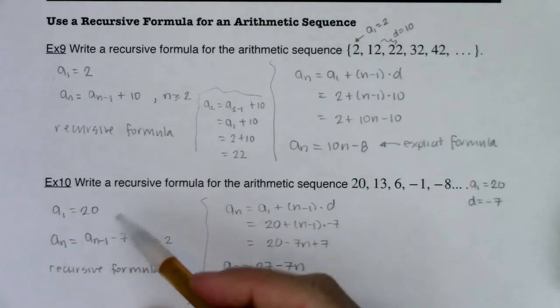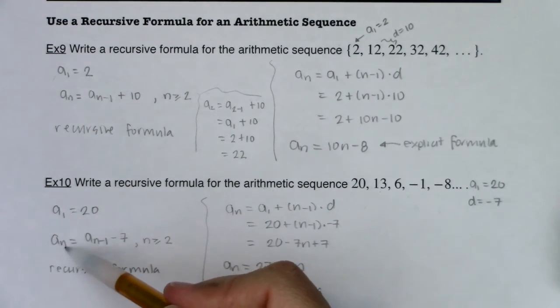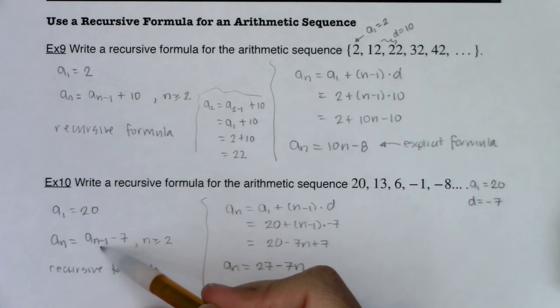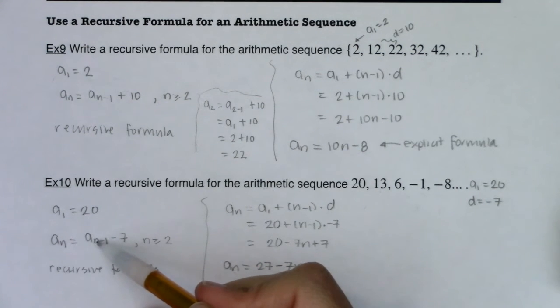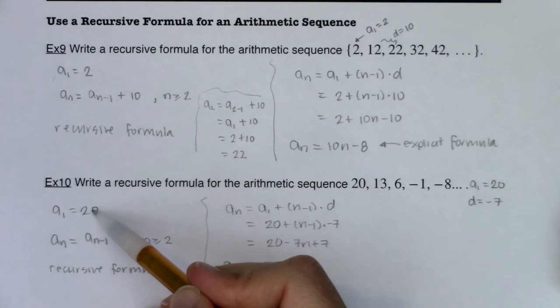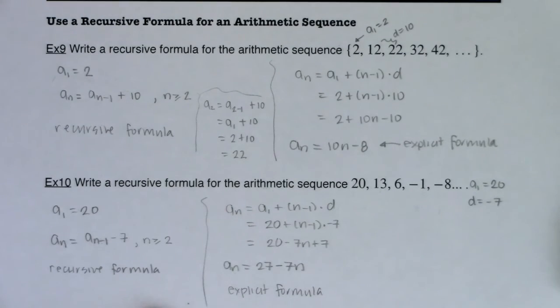Alright, here a sub 2 would be a sub 1 minus 7, right? Because this would be 2, this subscript is 2. 2 minus 1 is 1, so this subscript would be 1. So we would have a sub 2 is the term before it minus 7. Well what was the term before it? 20. And what is 20 minus 7? 13. Alright, so you've got the explicit formula for arithmetic sequences that we talked about in examples 1 through 8, and you've got the recursive formula.